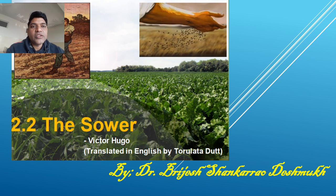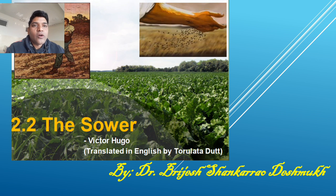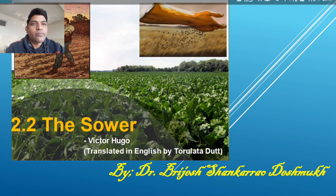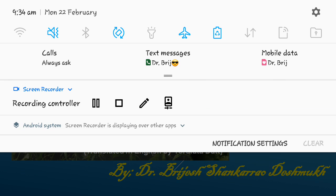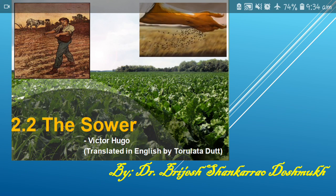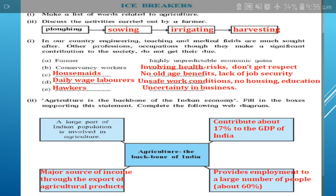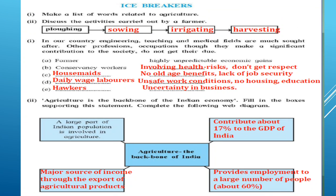Before having a little discussion about the writer or about the poem, we will have a quick look at the icebreakers given in the very poem. So let's discuss the icebreakers. At the very first, we have to talk about the activities related to agriculture. So which can be the activities?